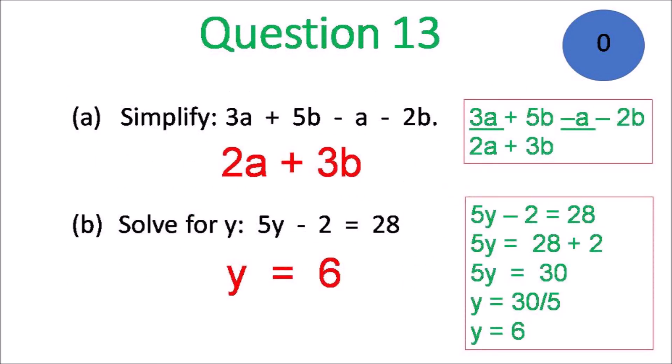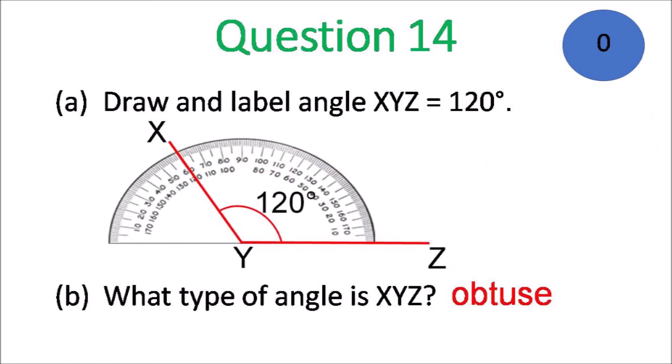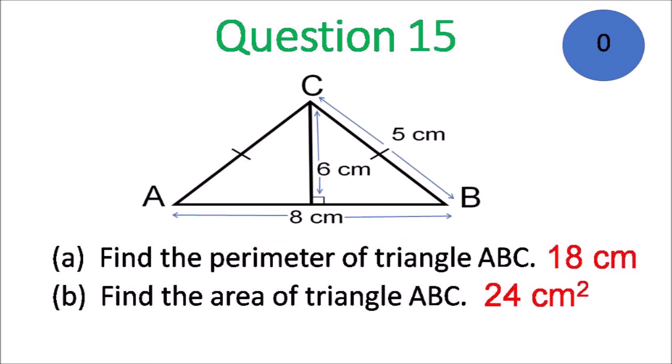Question 13: simplify to get 2A plus 3B, and Y equals 6 for part B. Question 14, part A: use a protractor and draw an angle of 120 degrees. Part B: it's an obtuse angle. Question 15: the perimeter would be 18 centimeters — distance all around — and the area is 24 square centimeters.